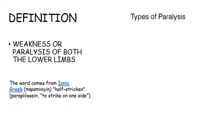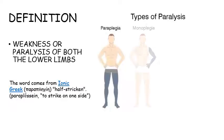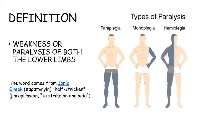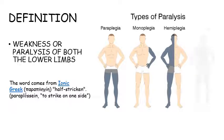The different types of paralysis may be paraplegia; monoplegia, which means paralysis of one limb; hemiplegia, that means paralysis of one half of the body; and quadriplegia, that is the paralysis of all four limbs.